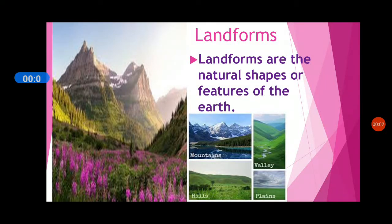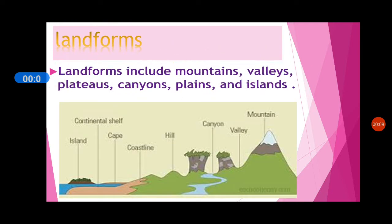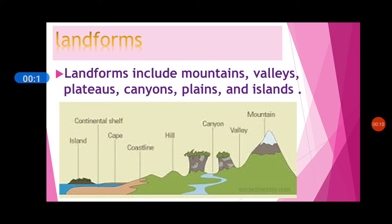Landforms are the natural shapes or features of the earth. Landforms include mountains, valleys, plateaus, canyons, plains, and islands.